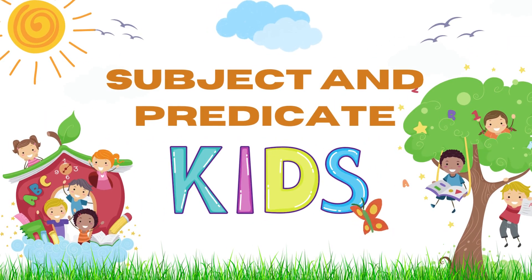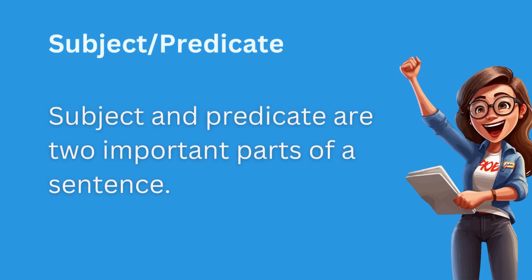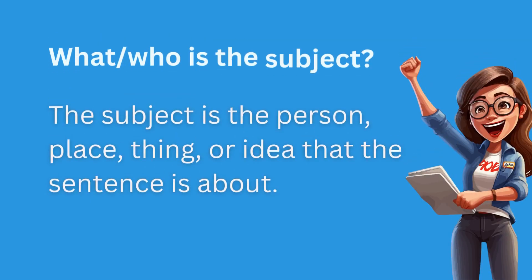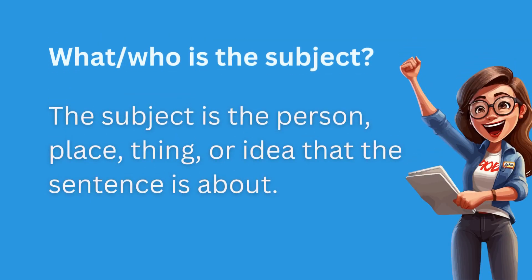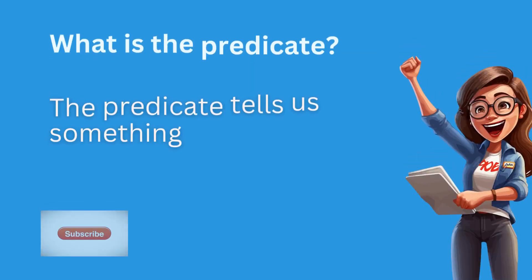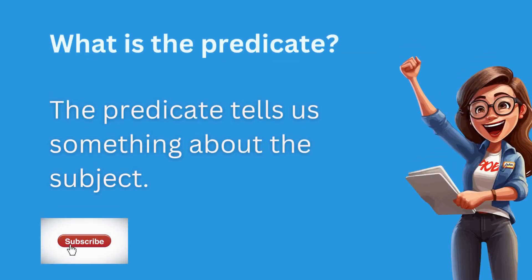Hi kids! Today we are going to talk about the exciting topic of subject and predicate. Subject and predicate are two important parts of a sentence. The subject is the person, place, thing, or idea that the sentence is about, while the predicate tells us something about the subject.